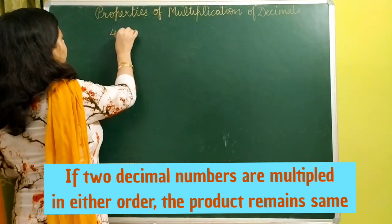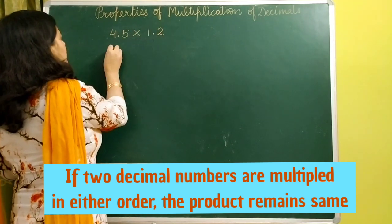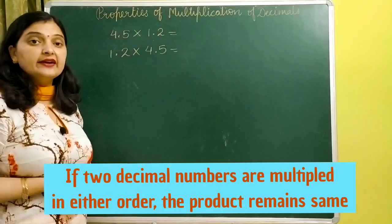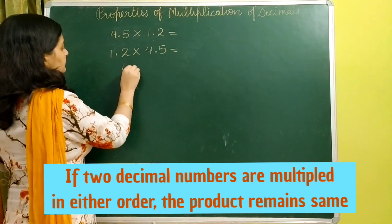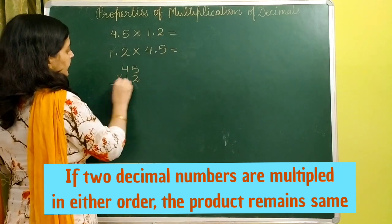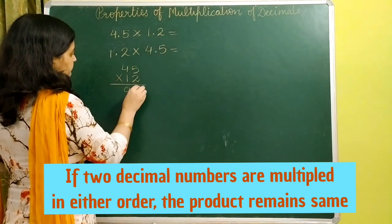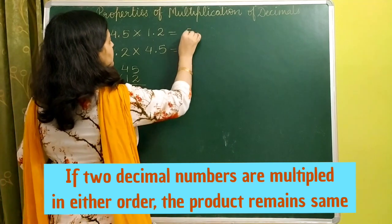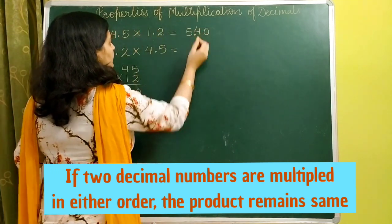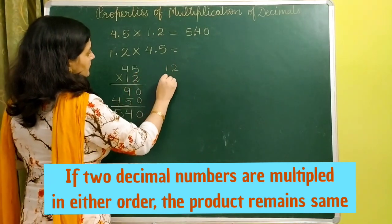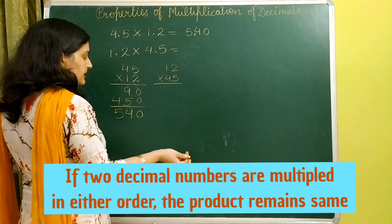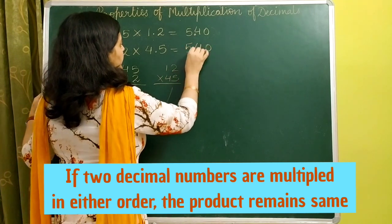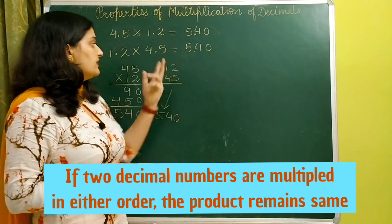For this, let us take 4.5 multiply 1.2. In any order you take, the result will be the same. To multiply 4.5 by 1.2, we calculate 45 into 12. Our answer is 540, and we have to place the decimal two digits before. If you multiply 12 by 45, we know the result will still be 540. Place the decimal and in both cases the result is same.